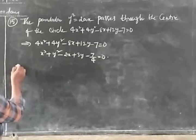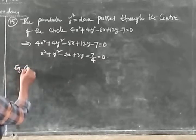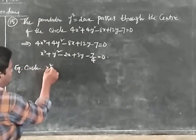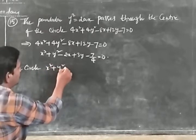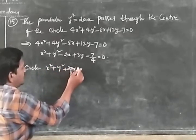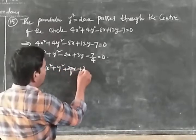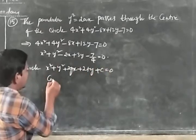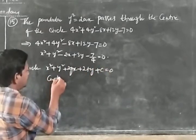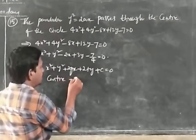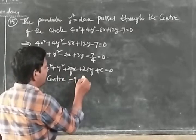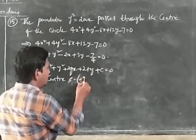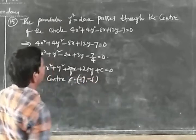The equation of a circle in standard form is x² + y² + 2gx + 2fy + c = 0, and its center is at (−g, −f).